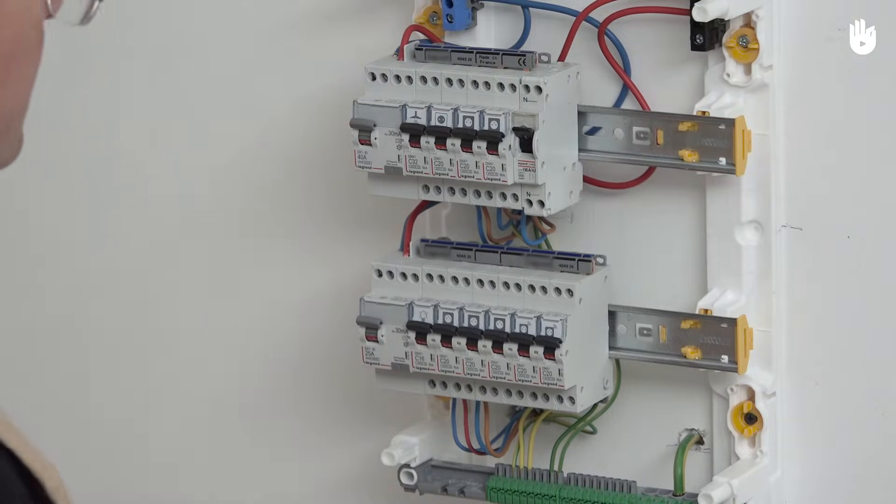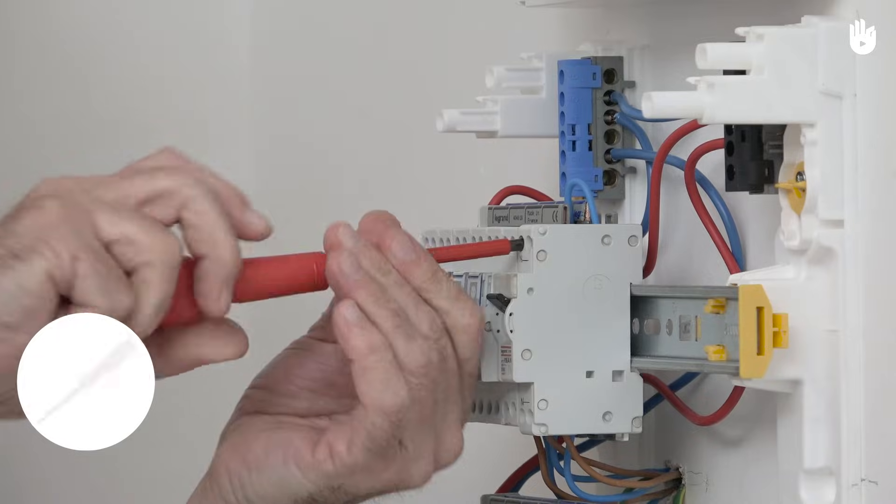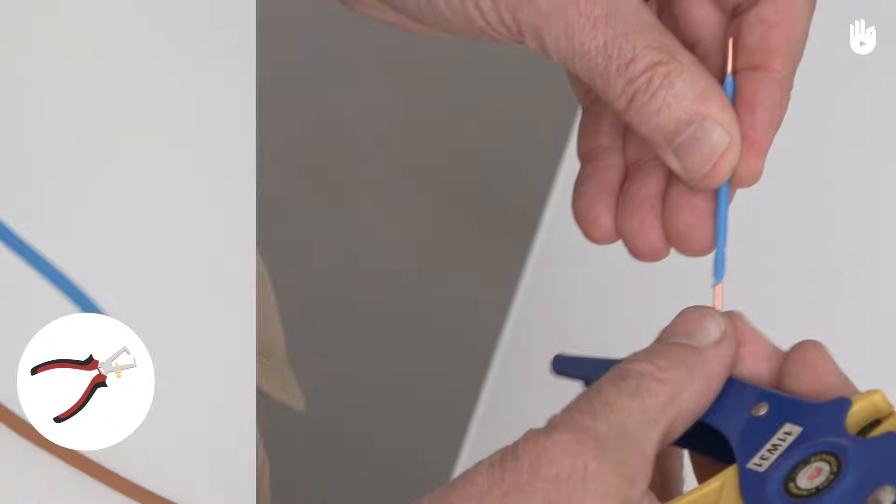To add an individual circuit breaker you will need your circuit breaker, a flat headed screwdriver, a wire stripper and a wire cutter.